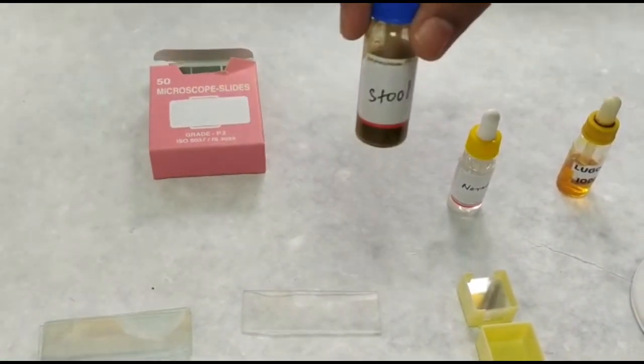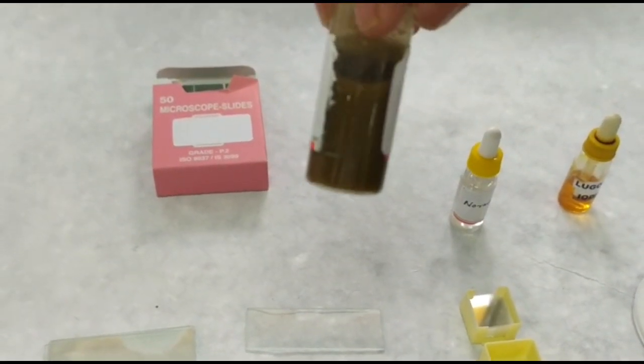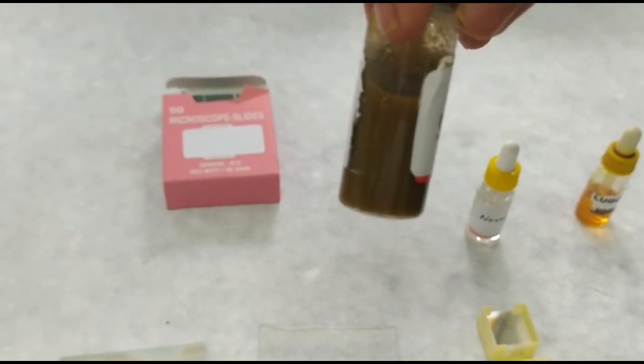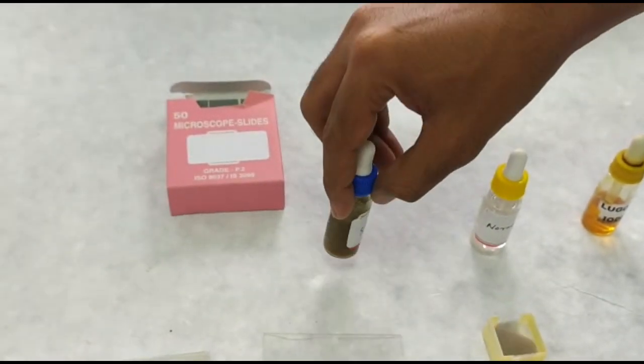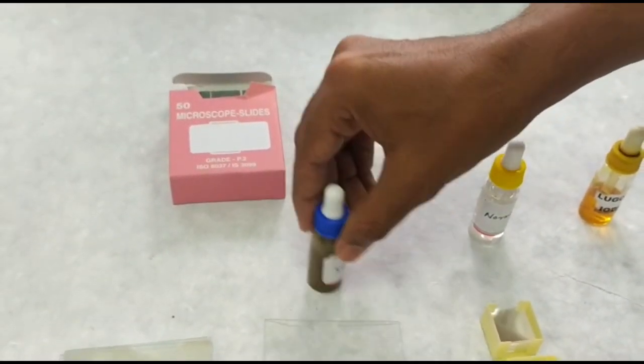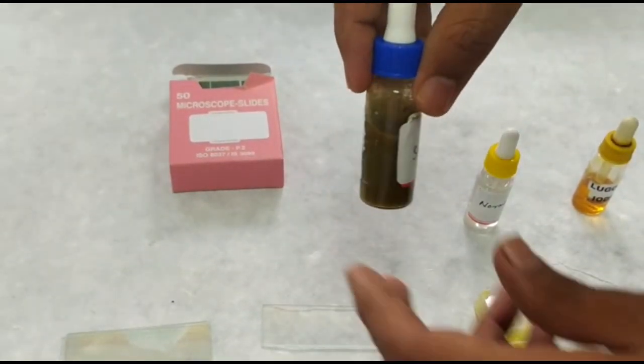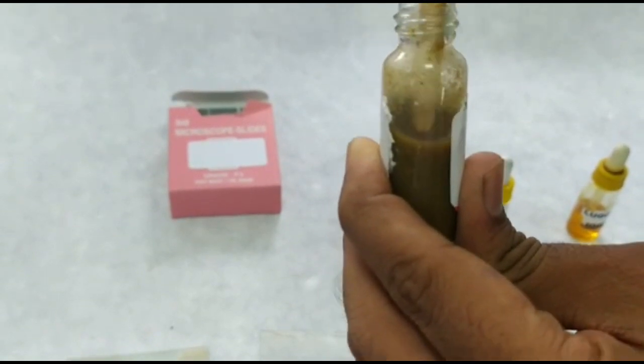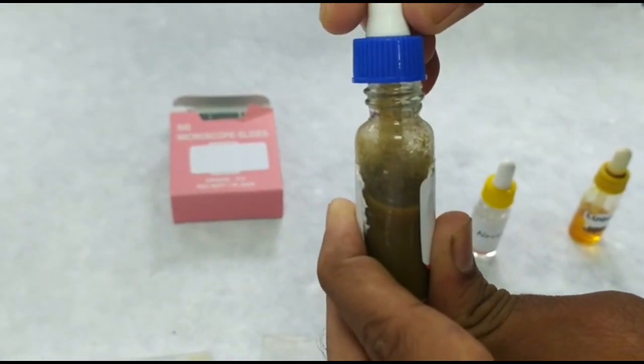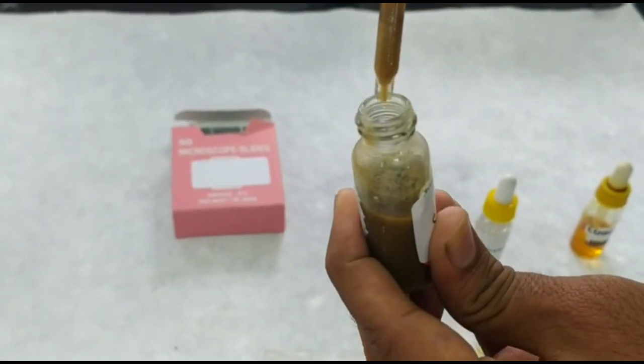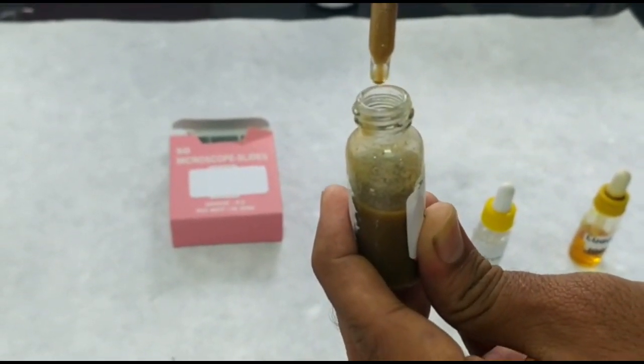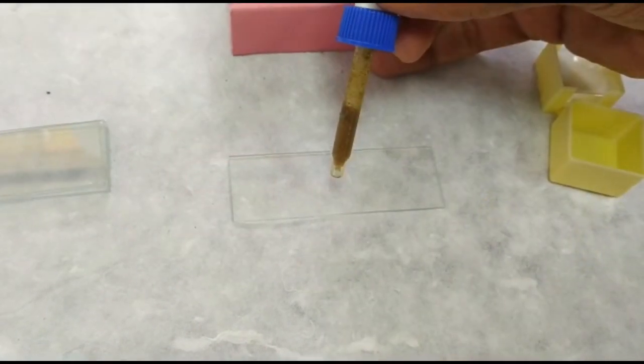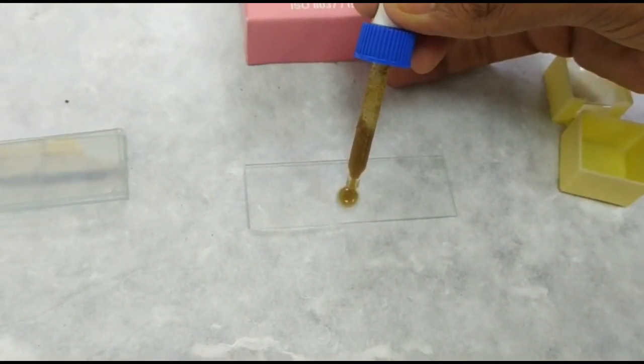Mostly the stool provided to you in exam is preserved in formalin and hence liquid in consistency. Hence you need minimal or no saline for wet mount. Now, first shake the bottle containing stool specimen and mix the contents thoroughly with use of rubber dropper two to three times. Fill the dropper with liquid stool specimen. Remove the first two drops as it may not contain any eggs. Then take only two drops of stool specimen on slides.